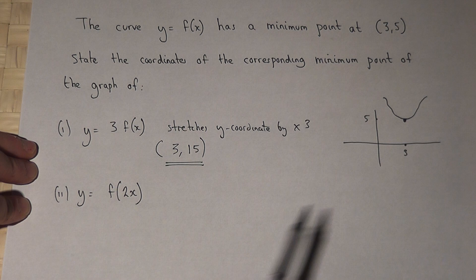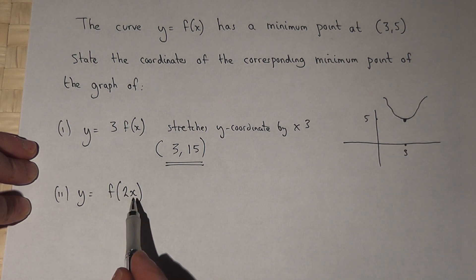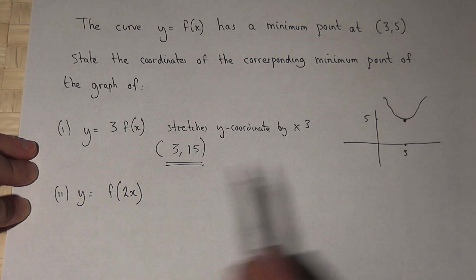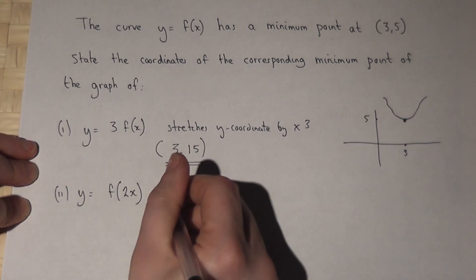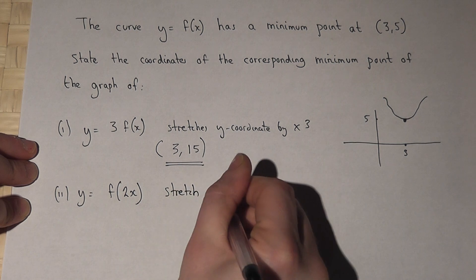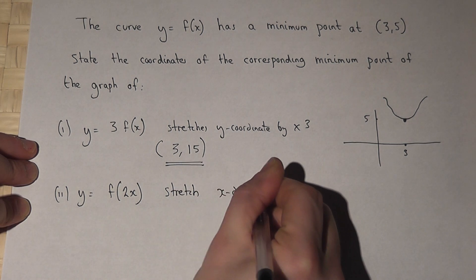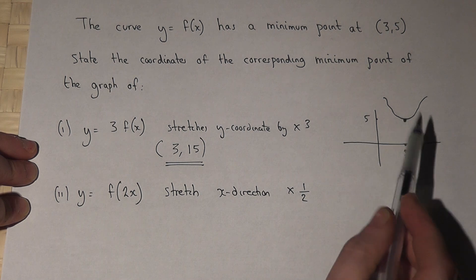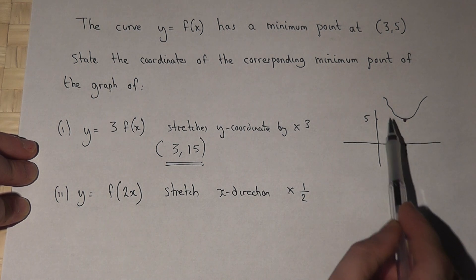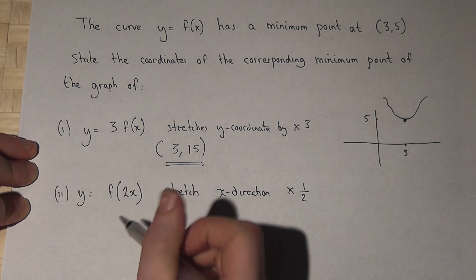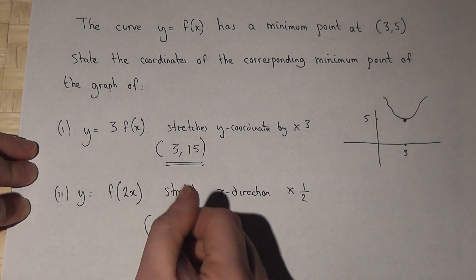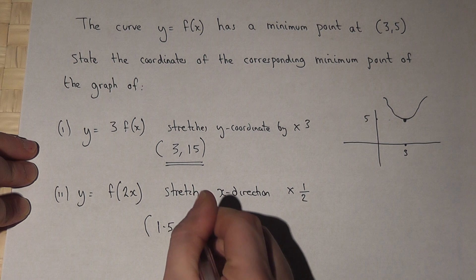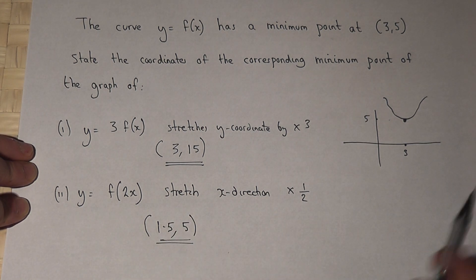Now then, back to the graph here. f(2x) actually stretches the graph in the x-direction, but by a factor of not 2, but a half. So this is a stretch in the x-direction, factor a half. So the y-coordinate doesn't change, but the x-coordinate gets halved. Therefore, 3 times a half is 1.5. The 5 doesn't change, so the new coordinate is (1.5, 5).